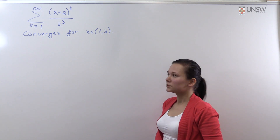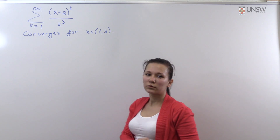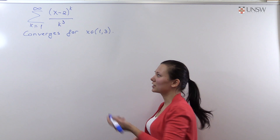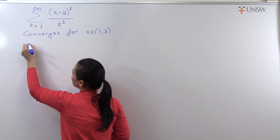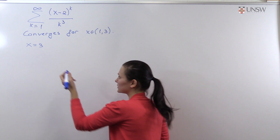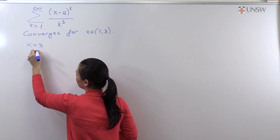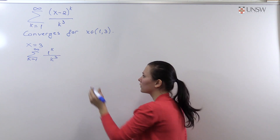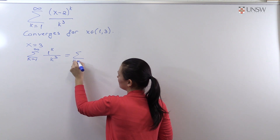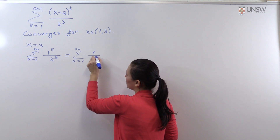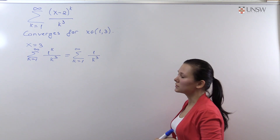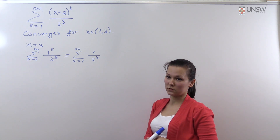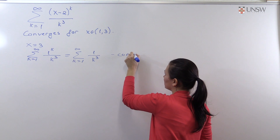We have found the interval of convergence, but now we need to discuss the behavior at the endpoints. Taking the endpoint x equals 3 and substituting, we get the series 1^k over k^3. Since 1^k equals 1, this is just the series 1 over k^3, which converges by the p-series convergence test.